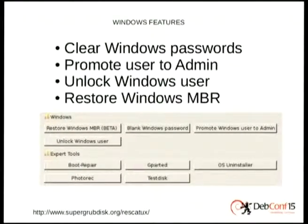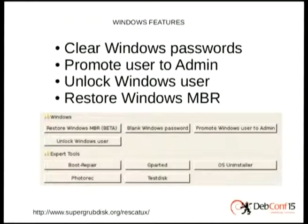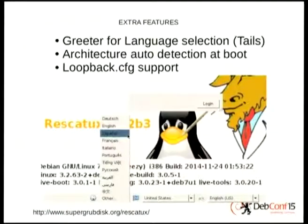For Windows users, we can clear Windows passwords so that you don't need a password to enter Windows — then you can set a new one within Windows. You can also promote a user to administrator. You can unlock a Windows user, because sometimes accounts get locked. And you can also restore the Windows MBR so that if you're not using Grub, you can boot with syslinux.